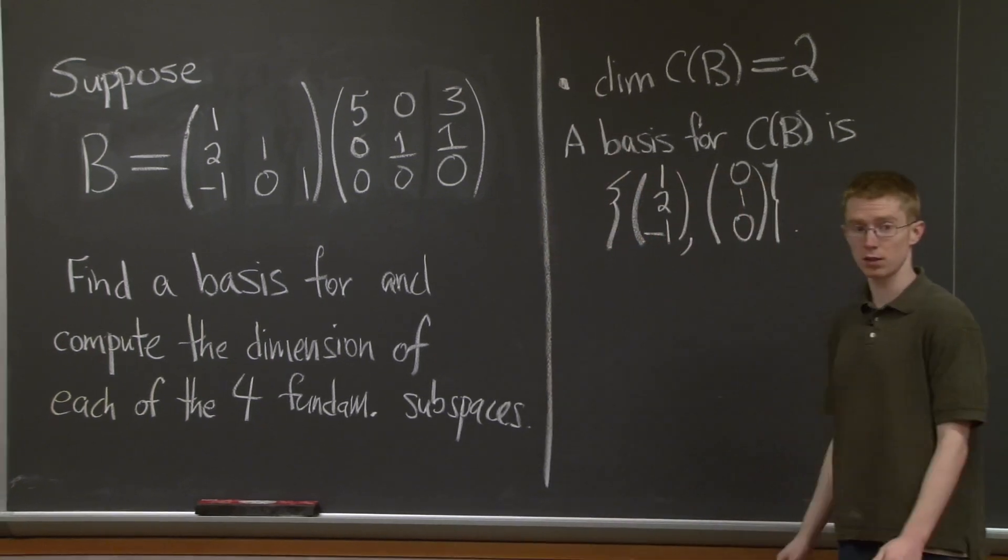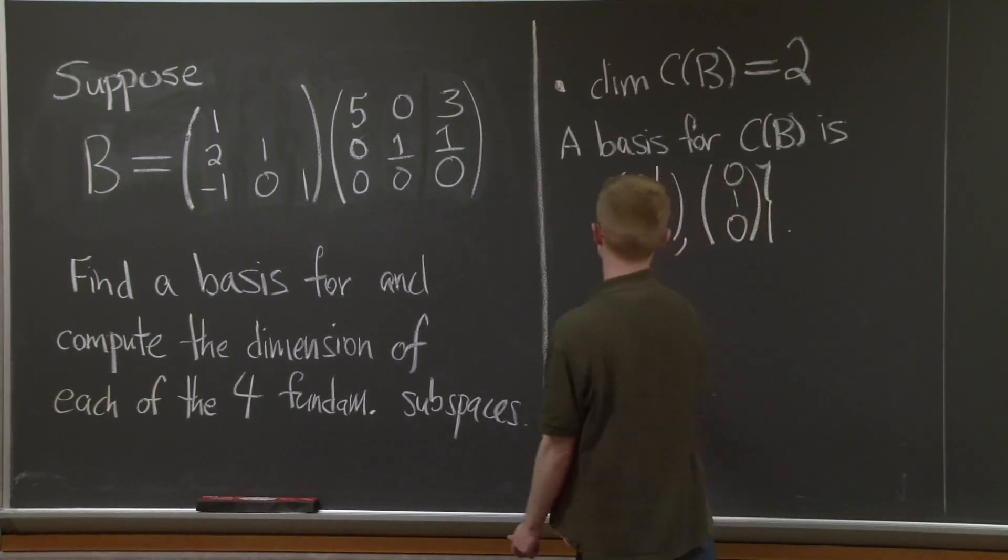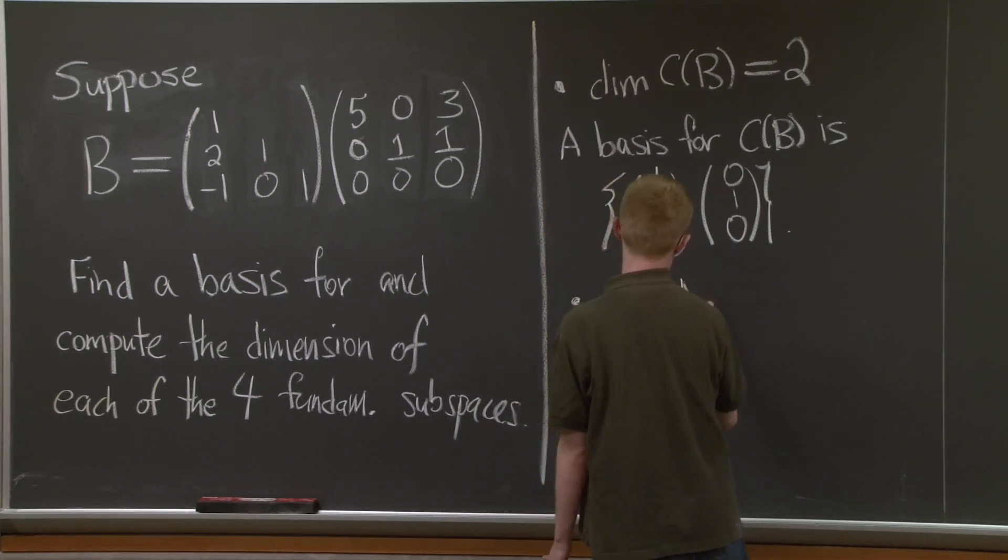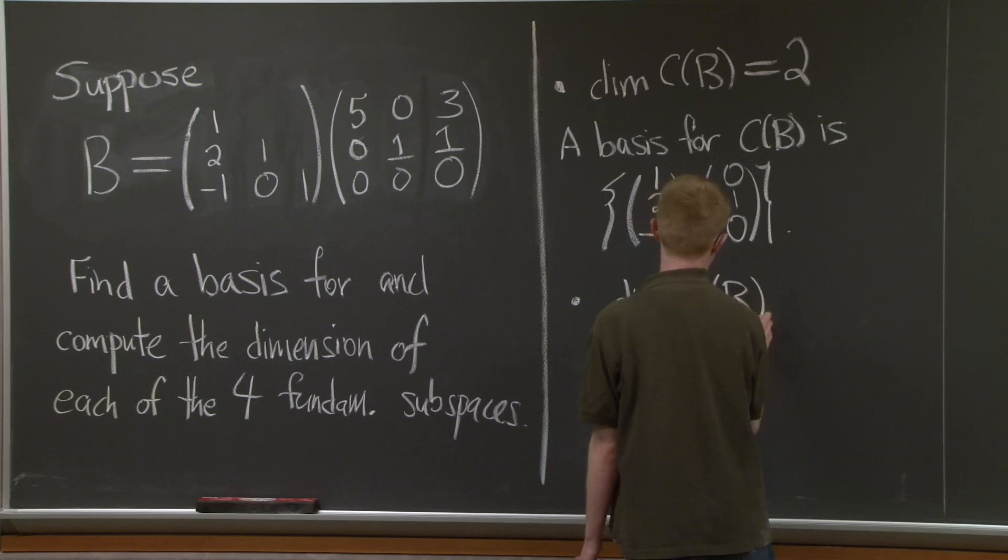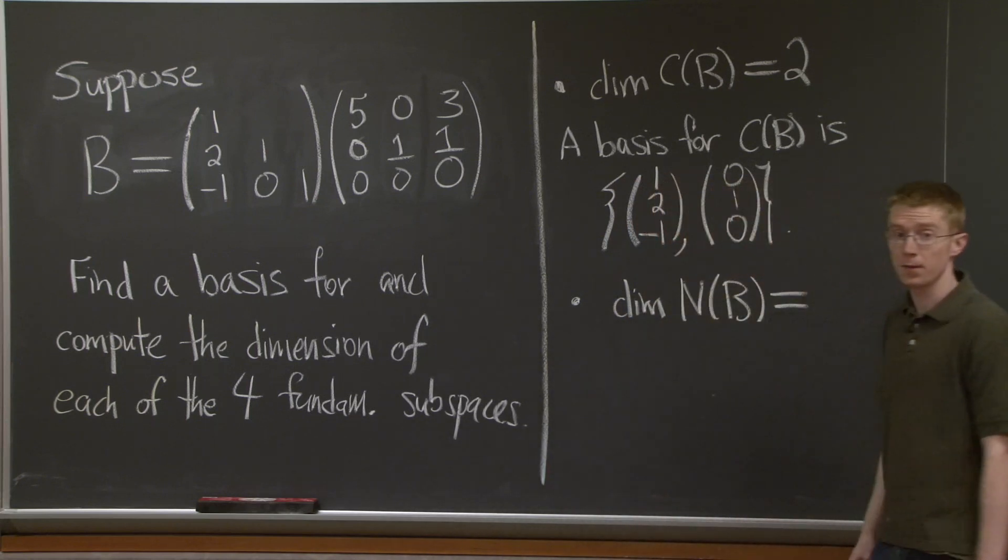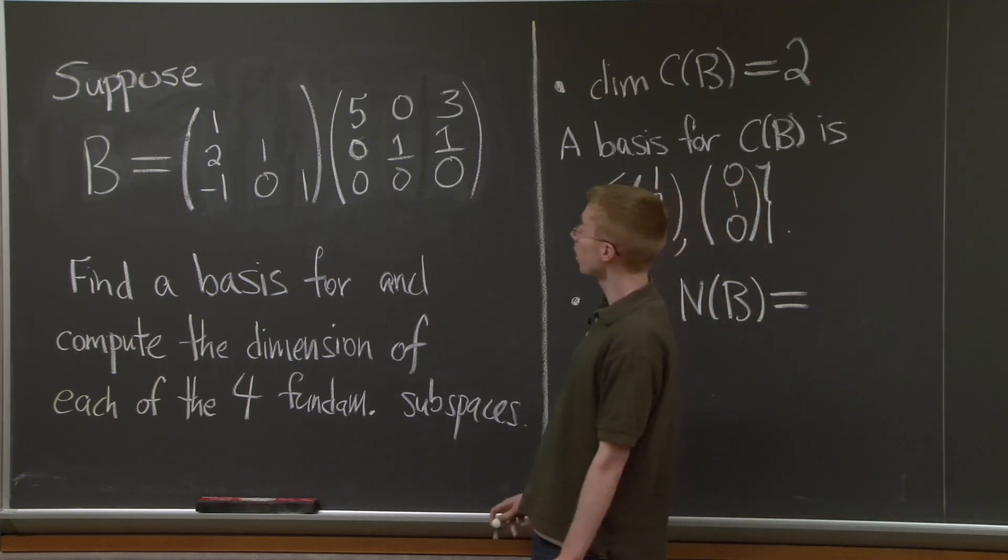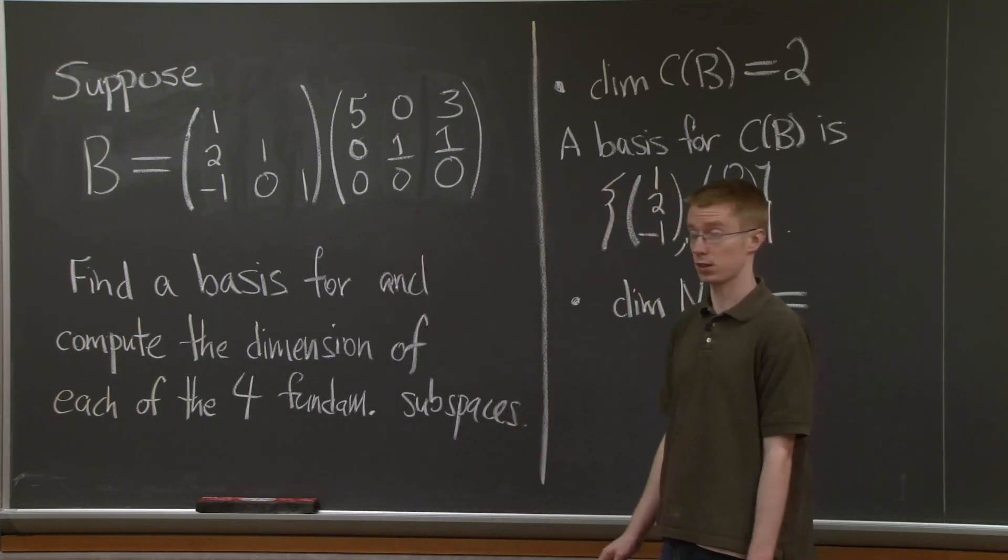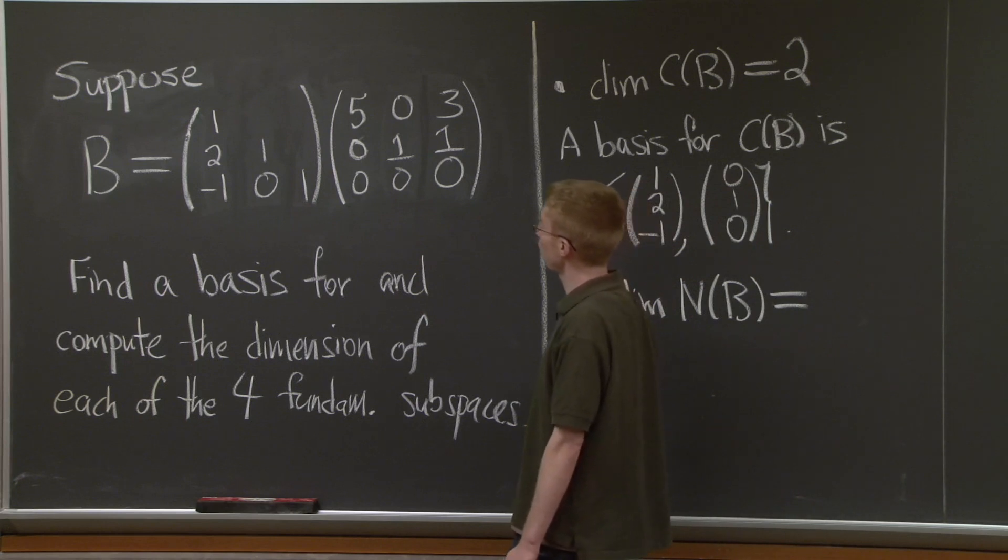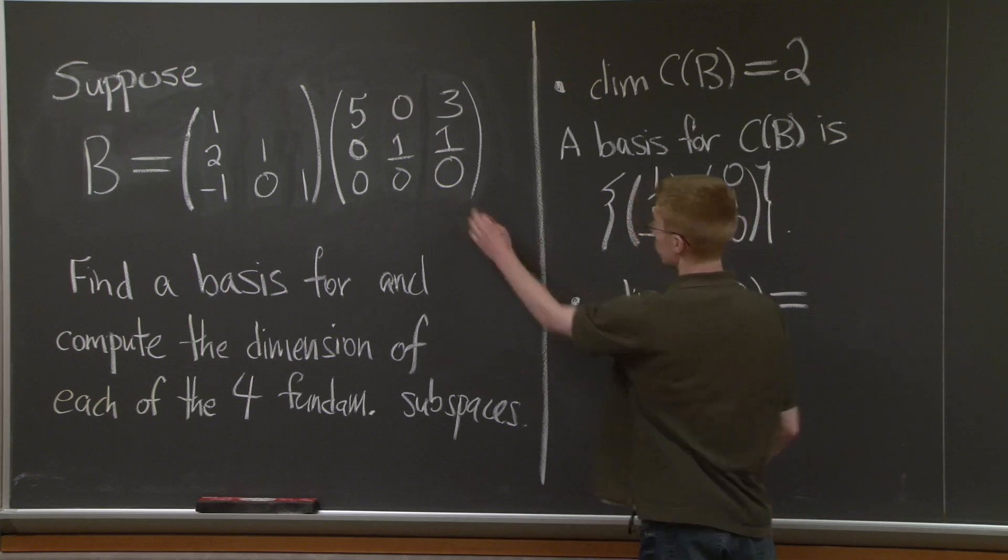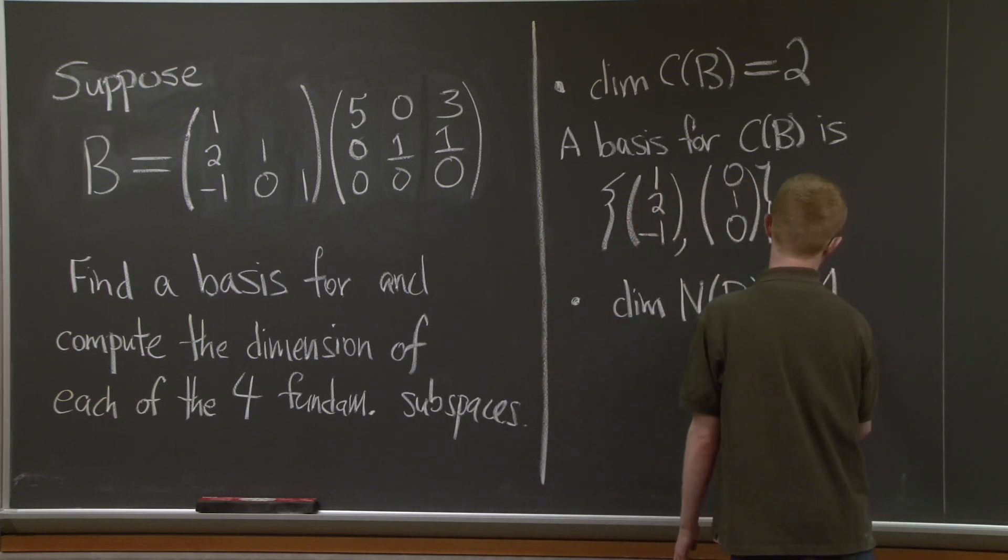Next, let's do the null space together. What's the dimension of the null space? Well, the dimension of the null space is always the number of columns minus the number of pivots. It's the number of free variables. So here, that's just 1.